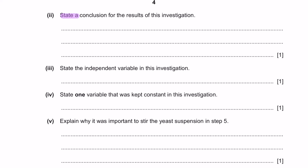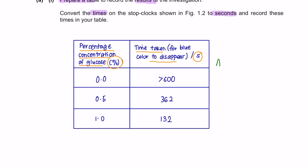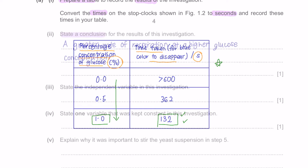Part 2: State a conclusion for the results of this investigation. As can be observed from the table, when the concentration of glucose increases, the time taken for the blue colour to disappear becomes shorter. This means that at higher concentration of glucose, the rate of anaerobic respiration is faster.